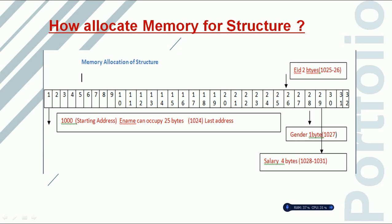Looking at the memory breakdown for the employee structure: employee name is of type character and can hold 25 characters, so it reserves 25 bytes. Employee ID is of type integer, requiring 2 bytes. Gender is of type character, requiring 1 byte. Salary is of type float, requiring 4 bytes. So the total memory allocated for the variable EMP is 25 + 2 + 1 + 4 = 32 bytes.